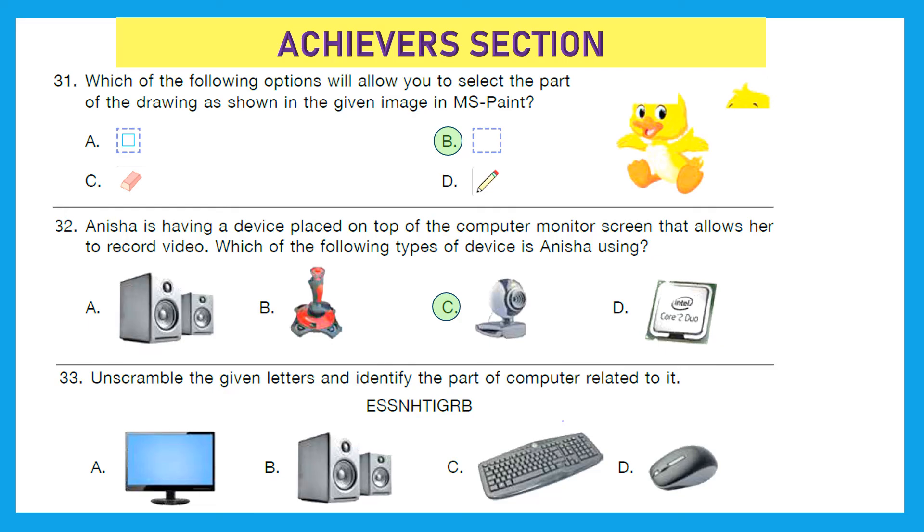Question 33: Unscramble the given letters and identify the part of the computer related to it. So let's first try to unscramble this big group of letters, and out of this we will get brightness. So which one of these four is related to brightness? And with brightness, it is basically display of something, right? Is it monitor, speaker, keyboard, or mouse? So the right answer is option A, monitor, because it itself says visual display unit, and the brightness is related to monitor.